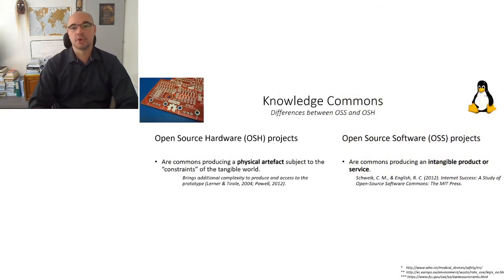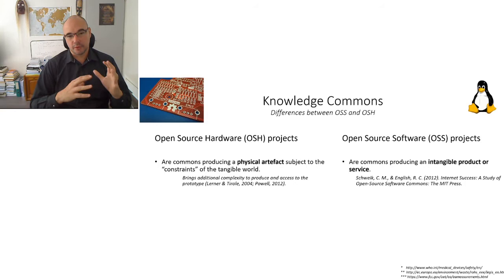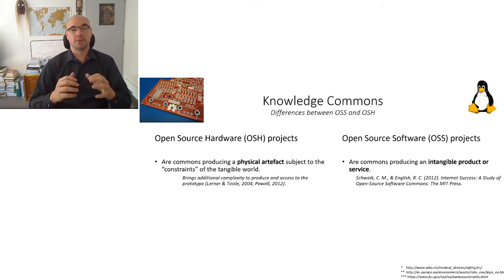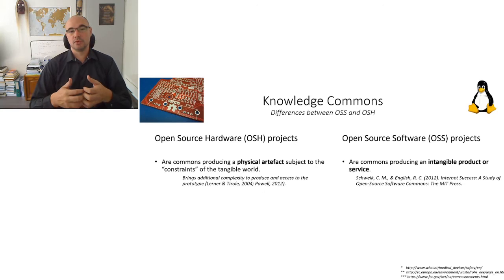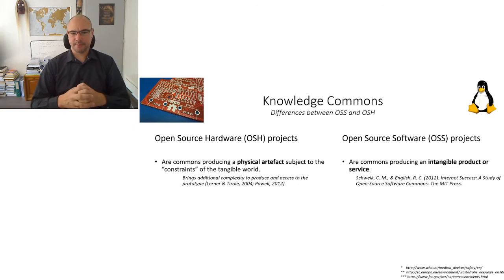Open source hardware projects and open source software projects are very similar — they're both knowledge commons. The beginning of the development stages are very similar, up to the point where the open source hardware project produces a physical artifact. That object is subject to constraints of the tangible world: being actually built somewhere with equipment, with physical access to that place or to the equipment to build it. And that completely changes the level of complexity of the project.